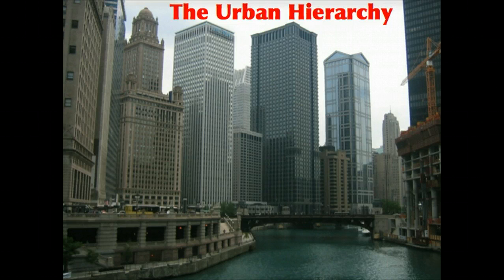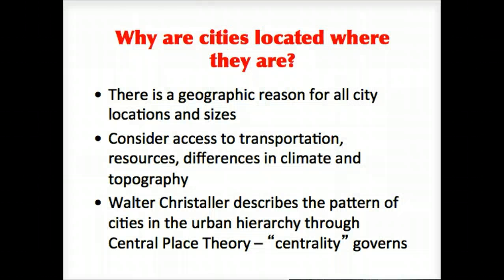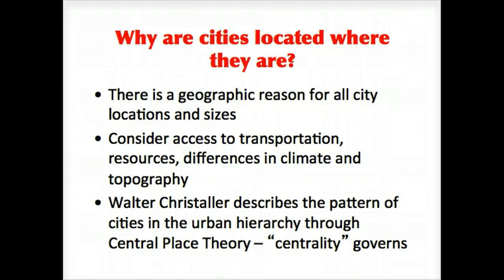Looking at the urban hierarchy models, we'll start from the smallest and go to the largest, but a couple of things before we get going. Where are urban settlements located? Generally speaking, we can talk about physical geography characteristics — whether it's the topography, the physical landscape, the climate, resources that are available, accessibility via cultural landscape, rail, road transportation, or port cities — all of which define where particular urban settlements are.